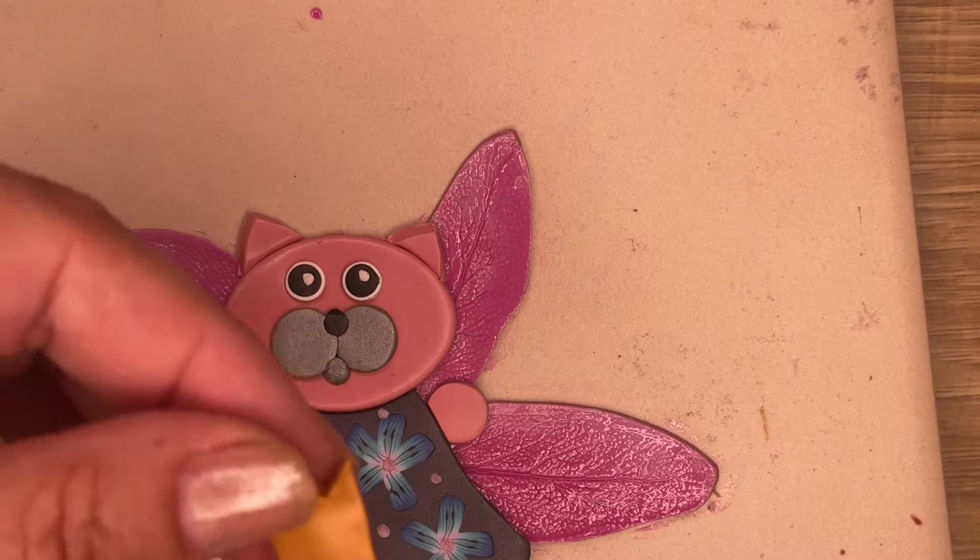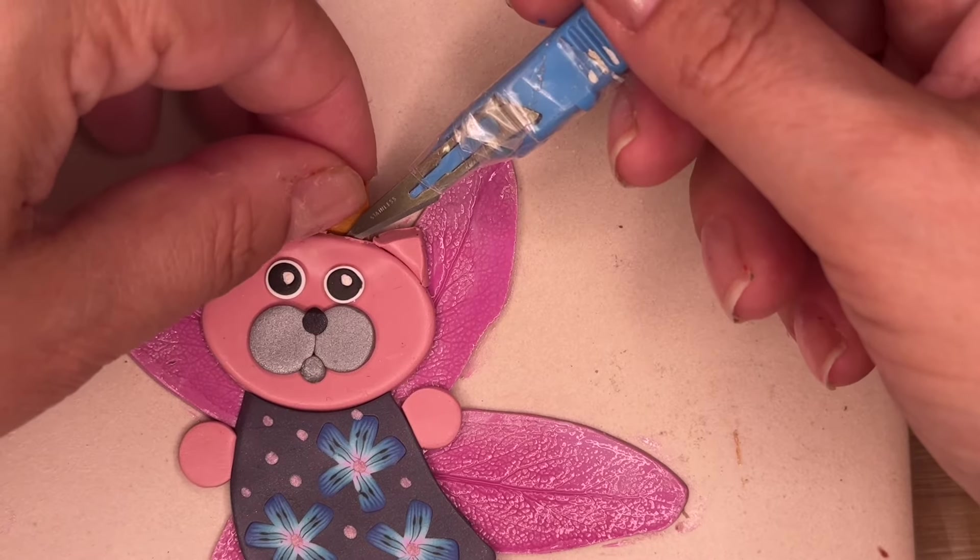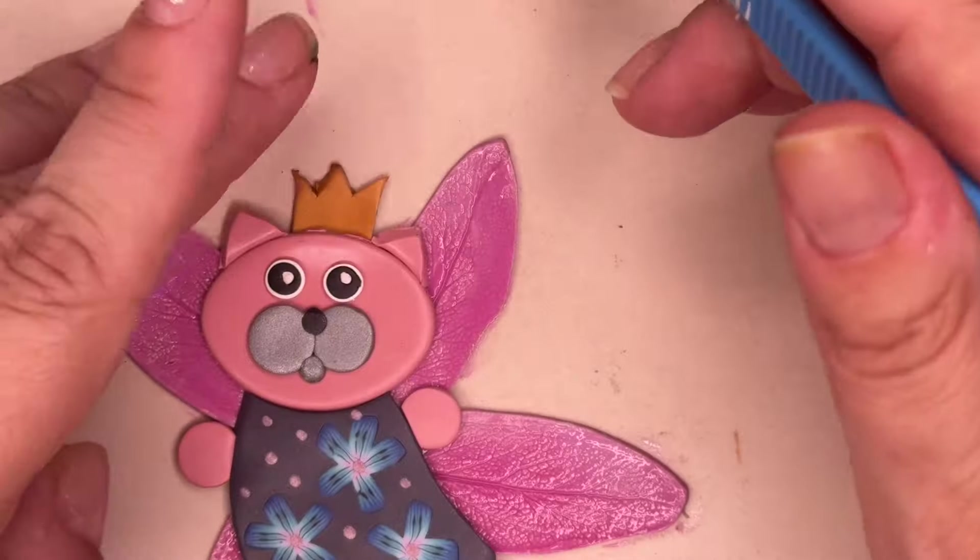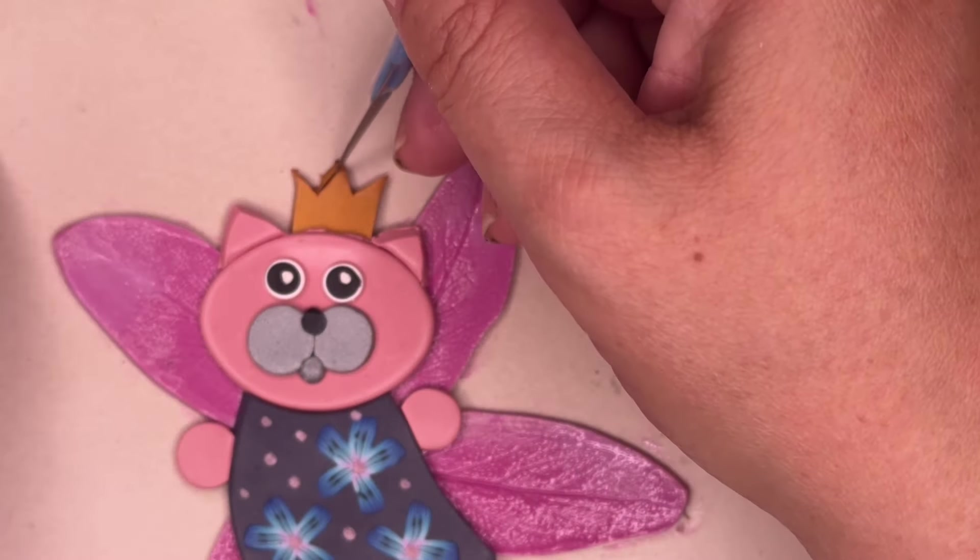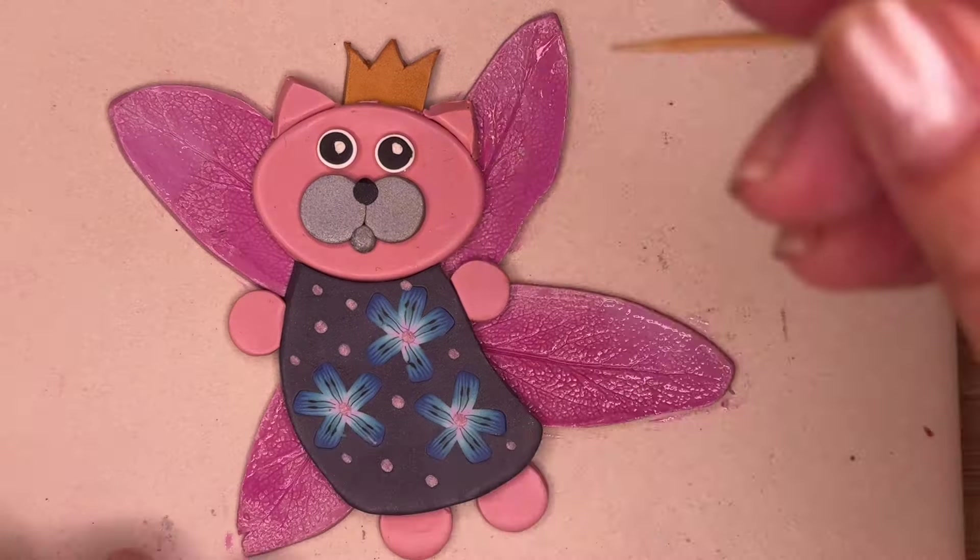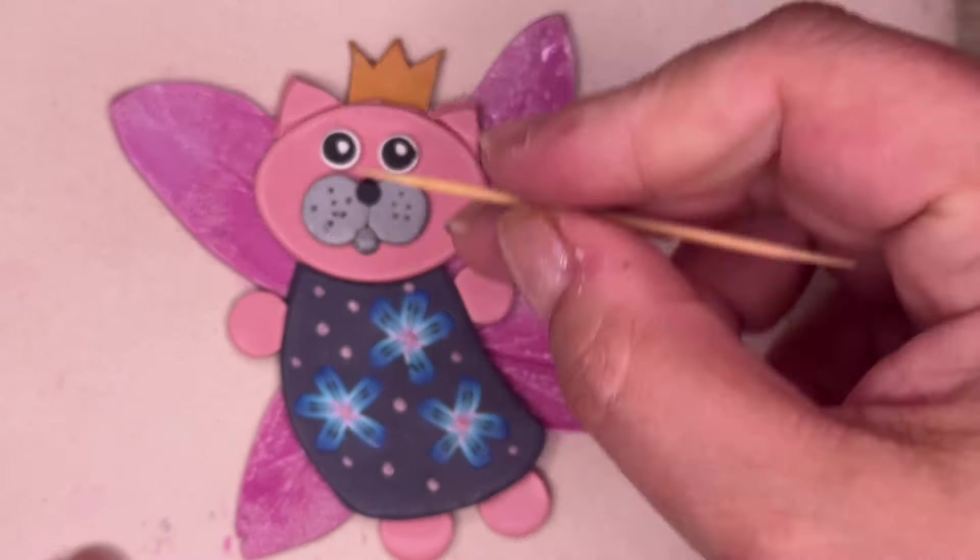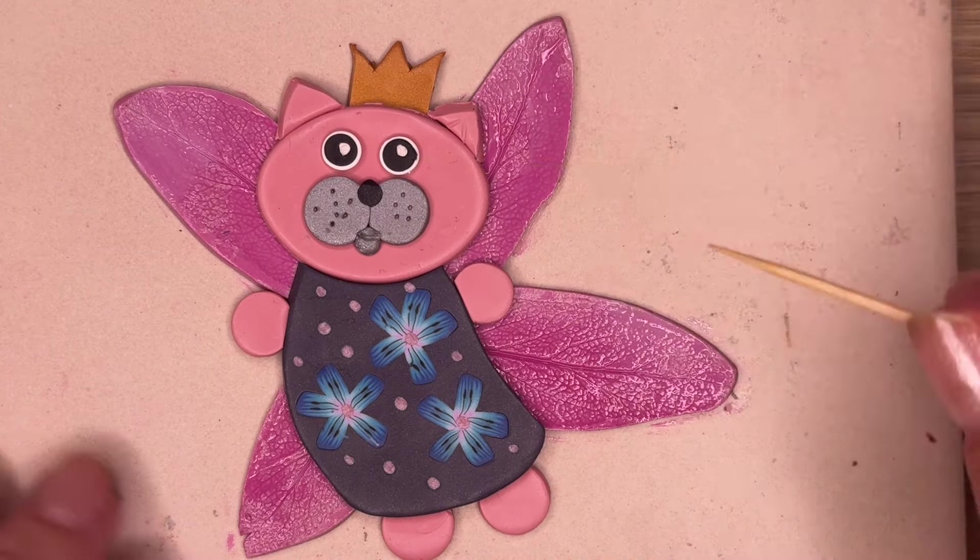So make everything nice and smooth. There needs to be some crown because it's a queen of fairies. This is very simple, just cut like so and place it again under the head because there are no wings. So it needs to be like so and it will support your head as well.